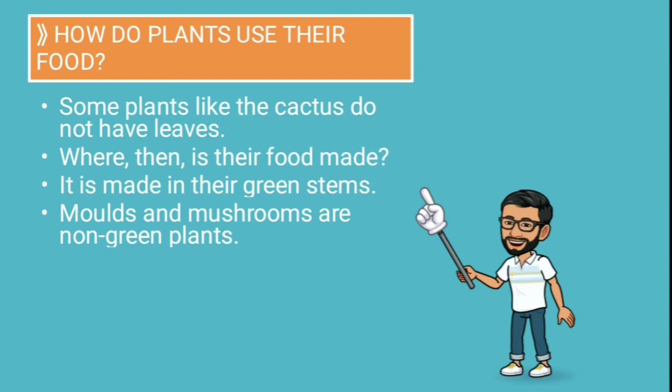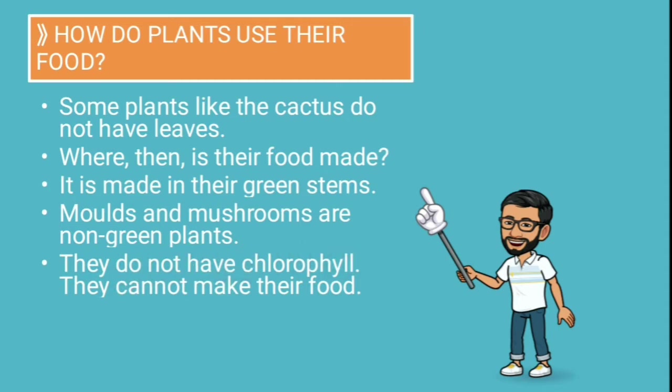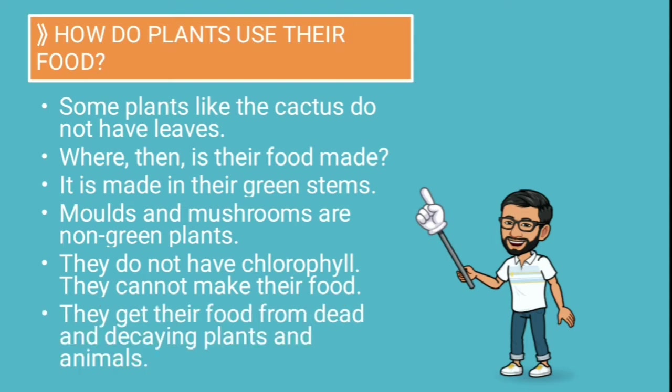Molds and mushrooms are non-green plants. In fact, they fall under the family of fungi. They do not have chlorophyll, so they cannot make their own food. If a plant or part of a plant doesn't have chlorophyll, it cannot prepare its own food. They get their food from dead and decaying plants and animals.